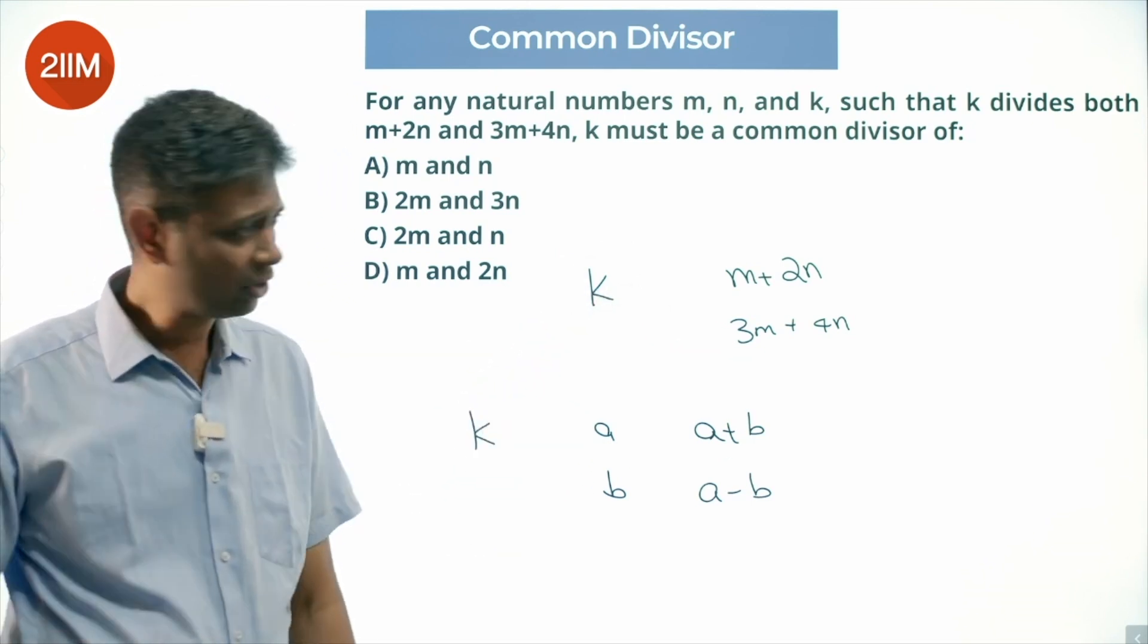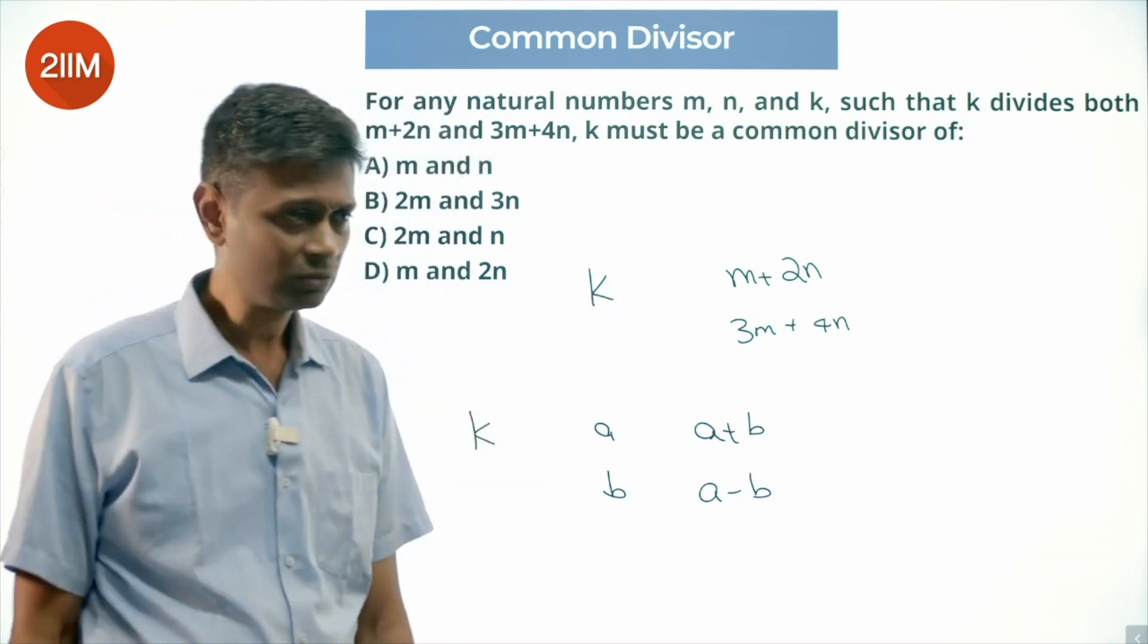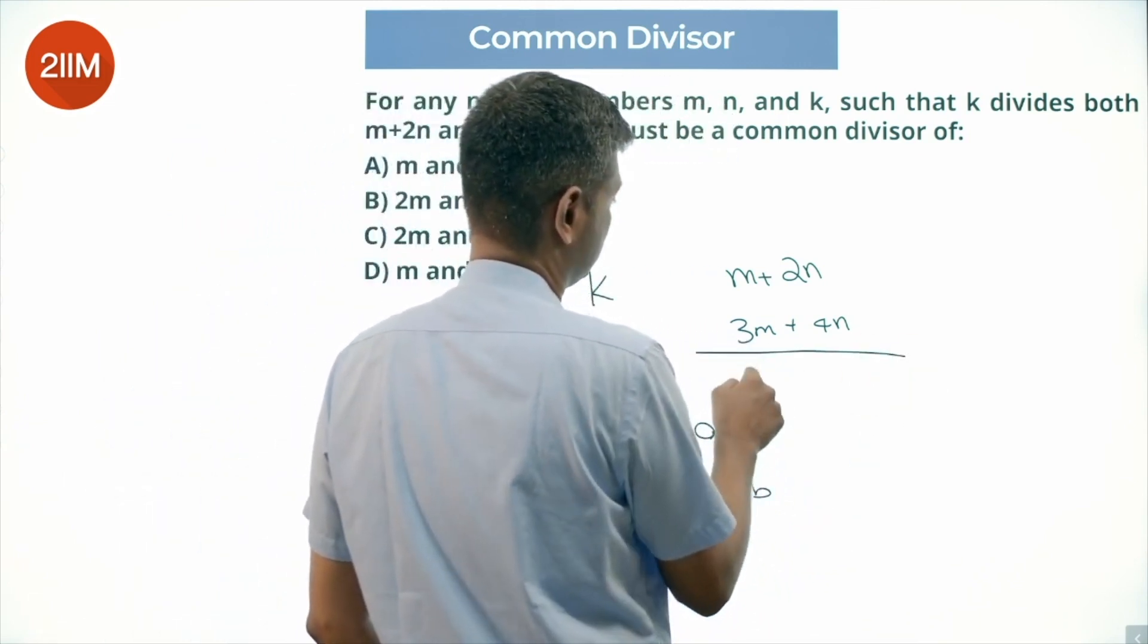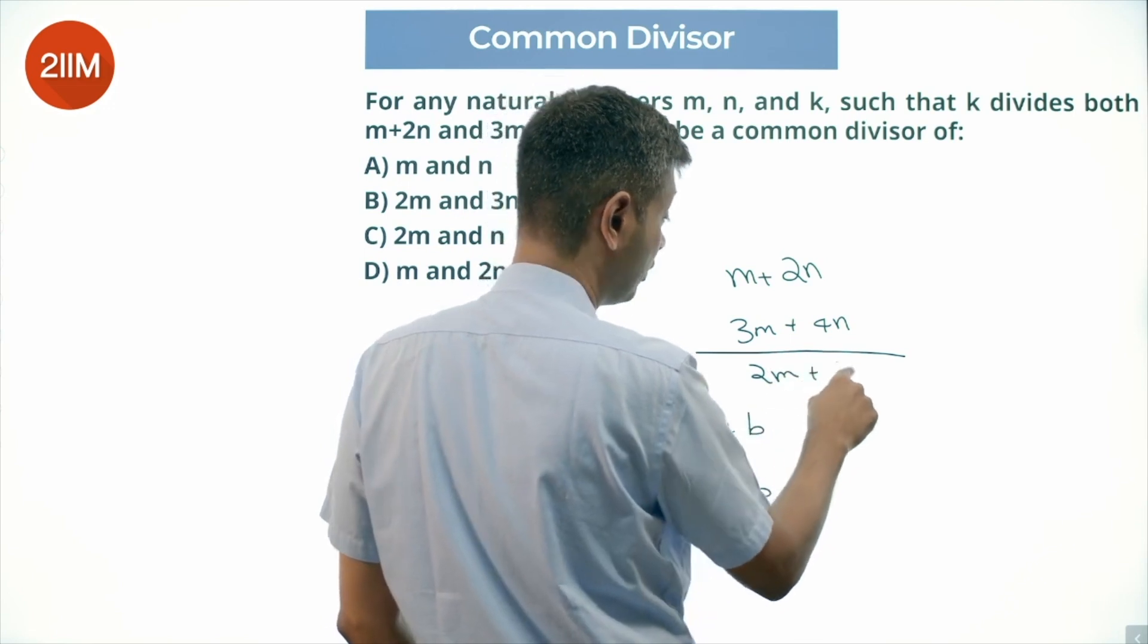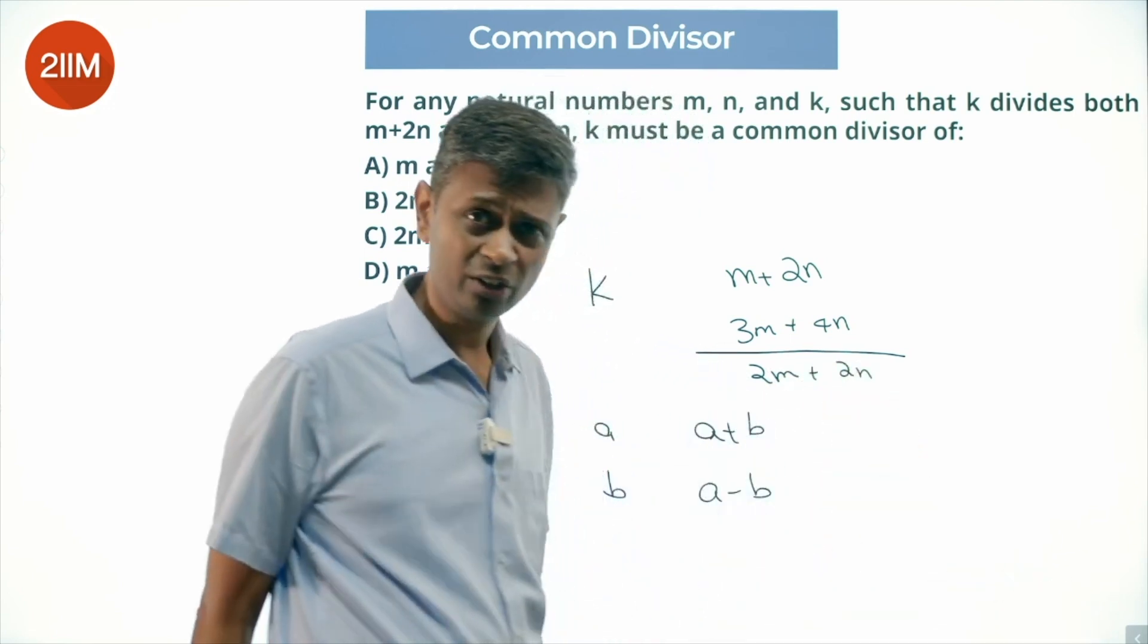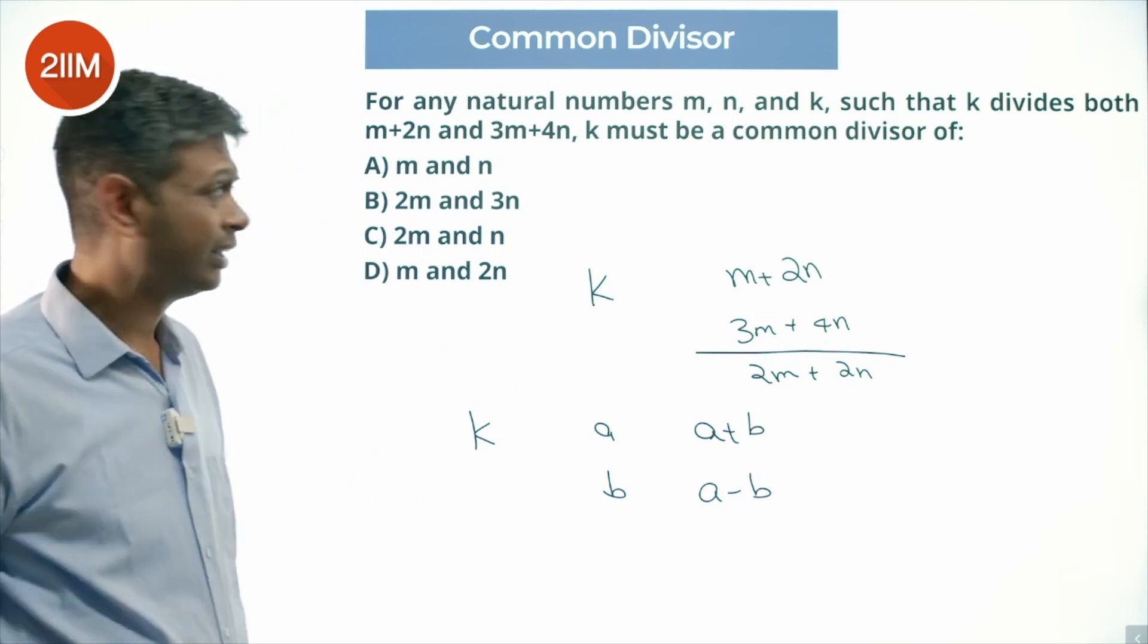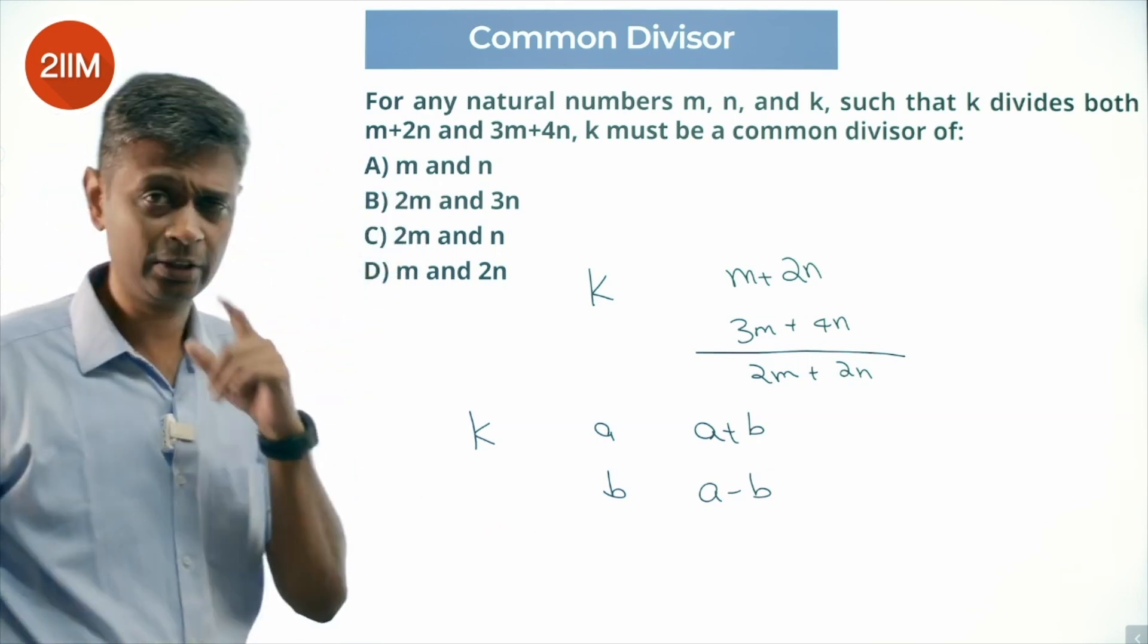When K divides this and K divides this, so what can we say? We can subtract one from the other, and then we subtract that - 2M plus 2N. K divides 2M plus 2N, which is nice, which is interesting. But all our choices are not 2M plus 2N, they are M separately, N separately.